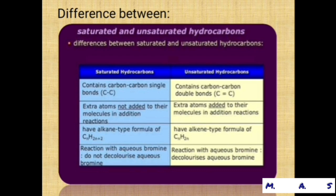Third point: saturated hydrocarbons have the alkane-type formula CnH2n+2. Unsaturated hydrocarbons have the alkene-type formula CnH2n. Fourth point: saturated hydrocarbons reacting with aqueous bromine do not decolorize aqueous bromine. Unsaturated hydrocarbons, when reacting with aqueous bromine, do decolorize aqueous bromine.